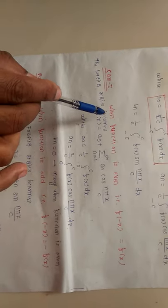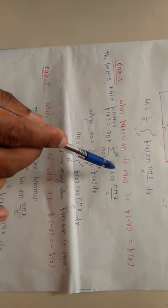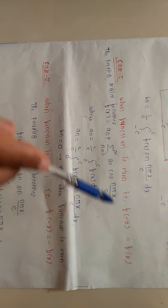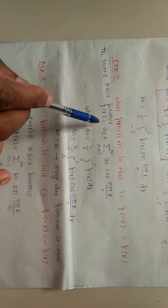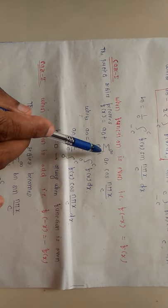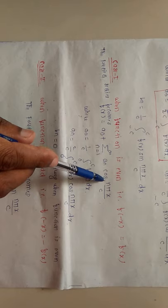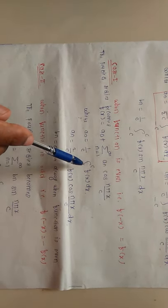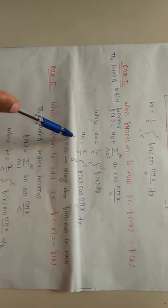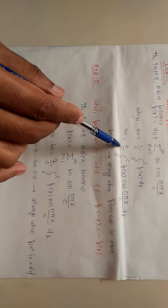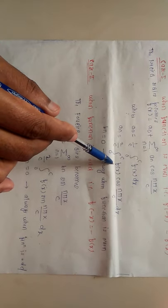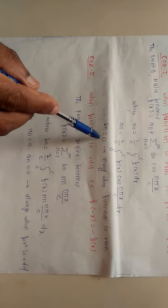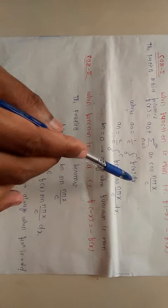There are two cases: when the function is even and when the function is odd. When the function is even, that is f(-x) = f(x), the Fourier series becomes f(x) = a₀ + Σ(n=1 to ∞) aₙ cos(nπx/c), where a₀ = (1/c) ∫₀^c f(x) dx and aₙ = (2/c) ∫₀^c f(x) cos(nπx/c) dx. The value of bₙ is always 0 when the function is even.